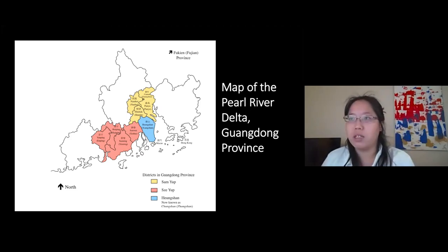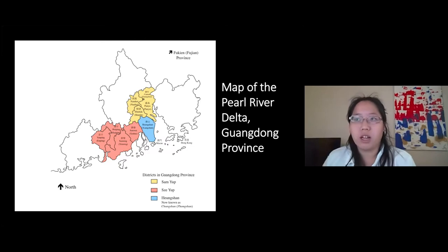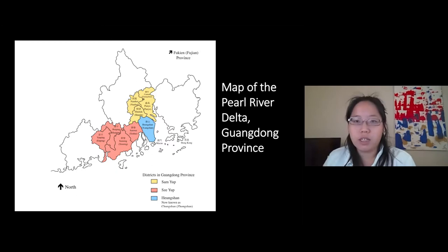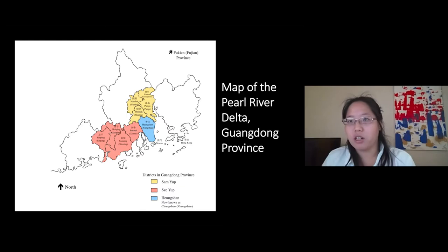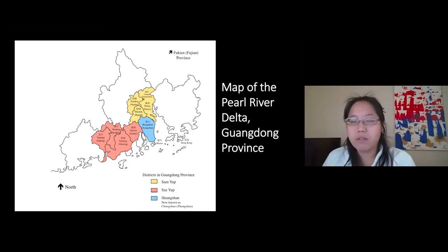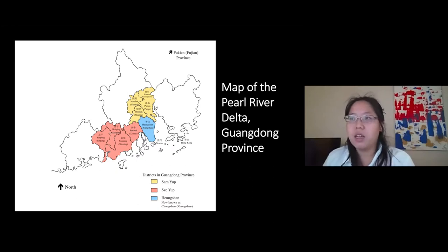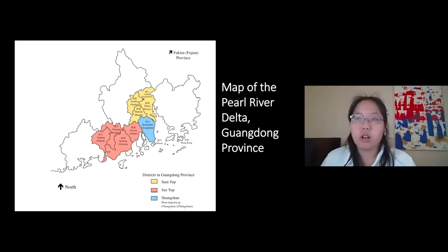Understanding that Chinese Americans came from these different areas of China is crucial for a few reasons: each region had its own dialects of Cantonese, not all of which are interchangeable with one another; each region also had its own unique cultural practices; and many Chinese immigrants created various forms of organizations and associations, some of which were based on their home villages.